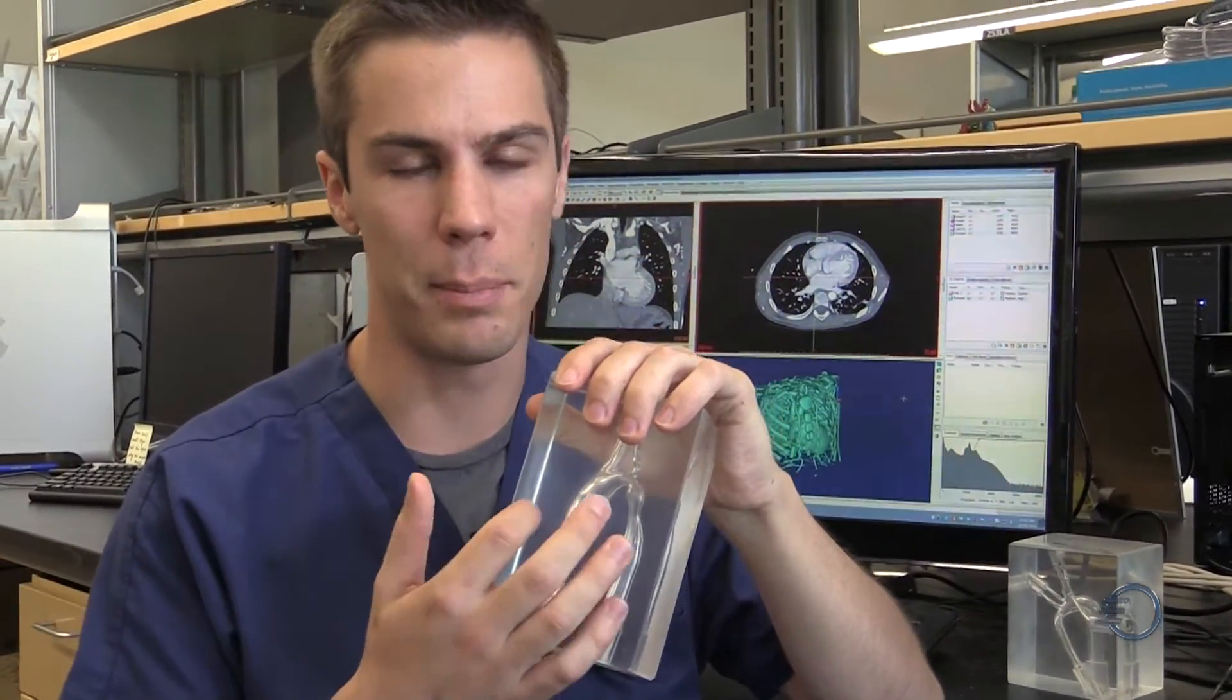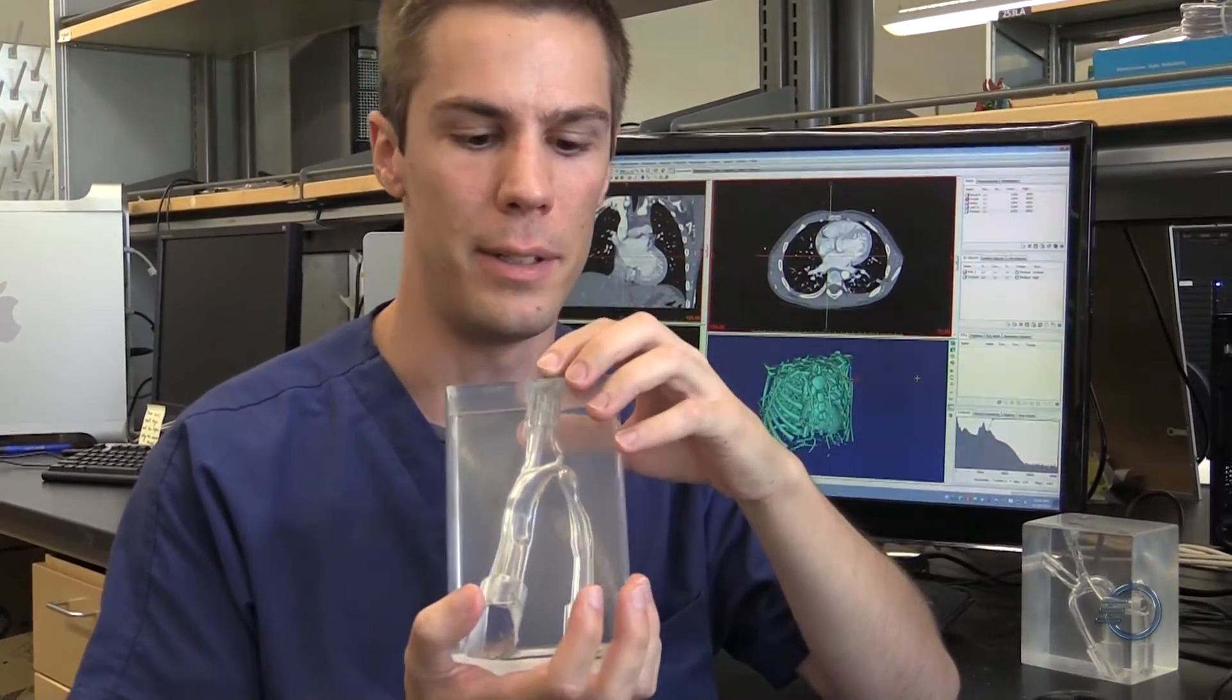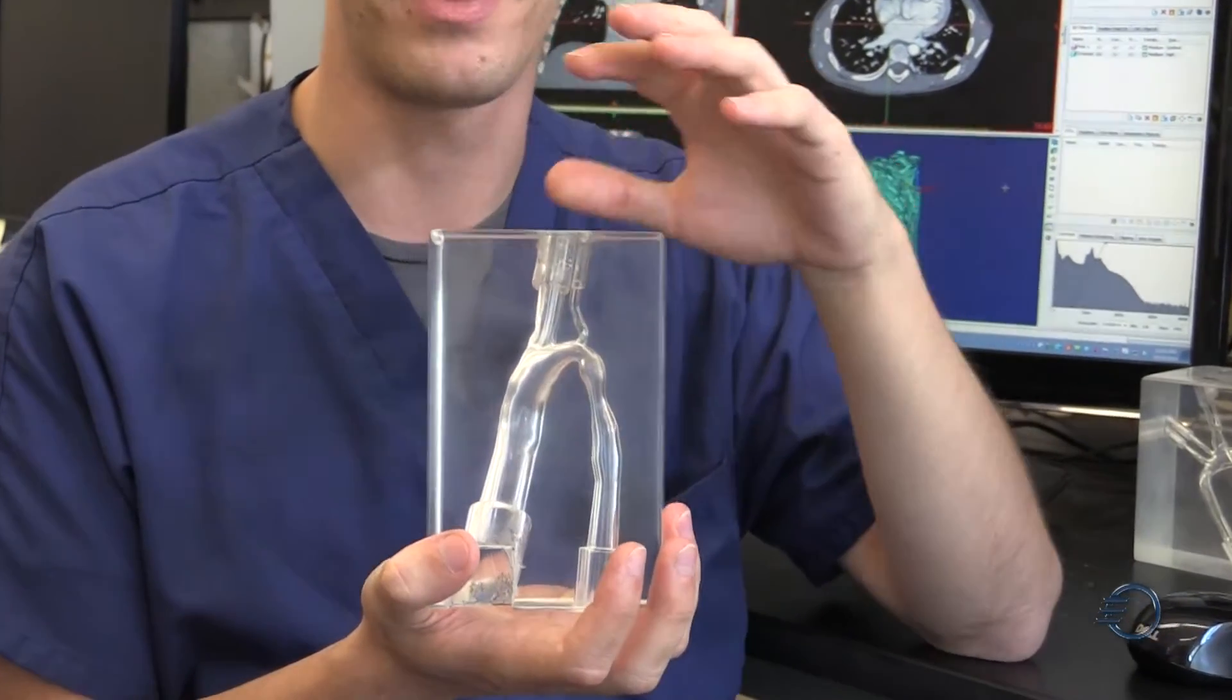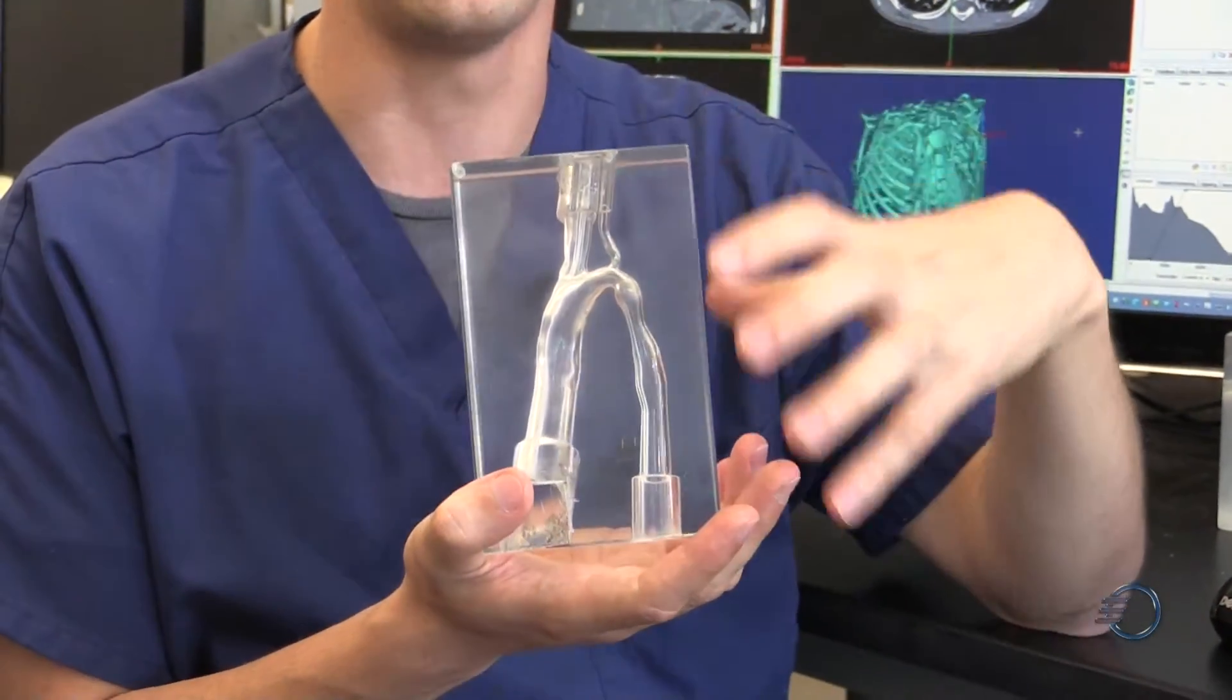This is an aorta. So what we have here is the biggest blood vessel leading off the body. We want to understand how malformations or diseases such as stenosis, which is narrowing in an aorta, can lead to high pressure or low pressures in different areas of this anatomy.